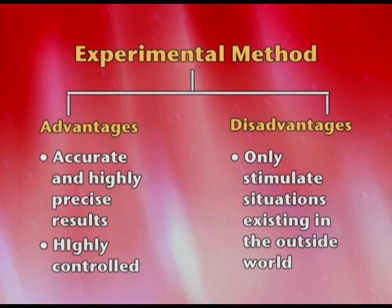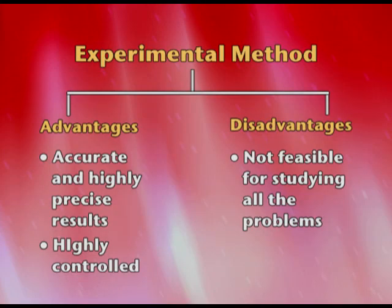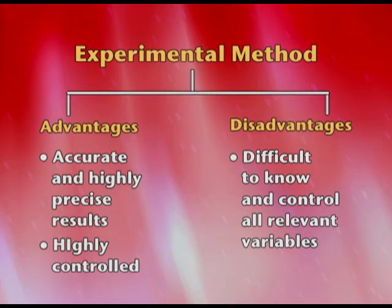We say the experimental method can only simulate certain conditions in a lab — you cannot have every kind of experiment in a lab. It has low external validity, meaning you cannot generalize findings to every setting. It is not feasible for studying all kinds of problems. For example, you cannot deprive people of food for two days to study them — that is very unethical. You cannot give them electric shocks — that is also unethical. It is also difficult to know and control all types of research variables.